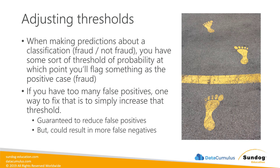Before adjusting thresholds, think about the impact it will have. If I raise my threshold, I'll flag fewer things as fraud — meaning I might miss some actual fraudulent transactions, but I won't be bothering customers as much by shutting down their credit cards. You might actually want the opposite effect: lower the threshold to flag more fraud cases. Fraud might be a case where you're better off guessing wrong on non-fraud than missing real fraud. You need to think about the cost of a false positive versus a false negative and choose your thresholds accordingly.